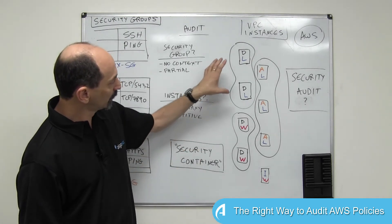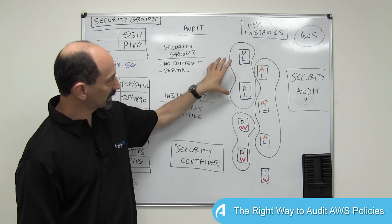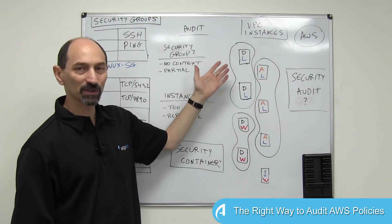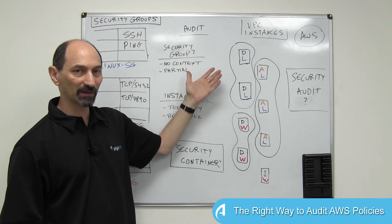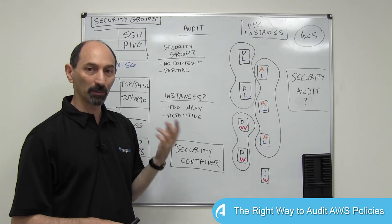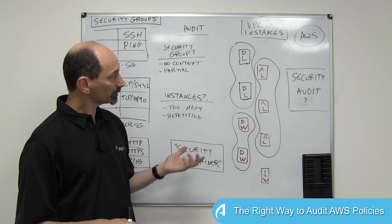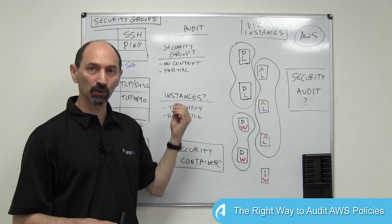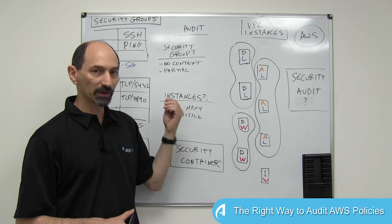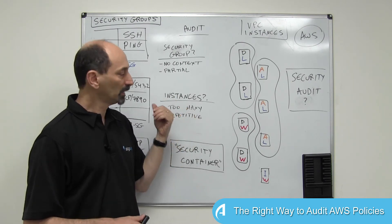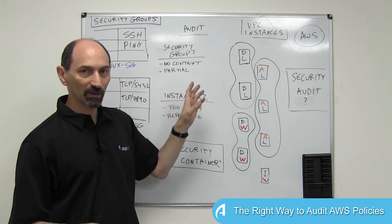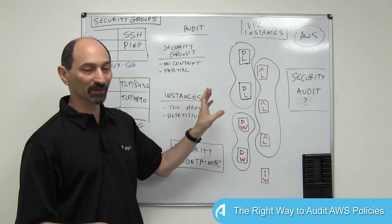The point is that if you look at a security container, by definition all the servers — all the instances in it — have exactly the same security group combination. And therefore, from a security review point of view, they're all identical. They're all clones. So it's enough to review just one of them.